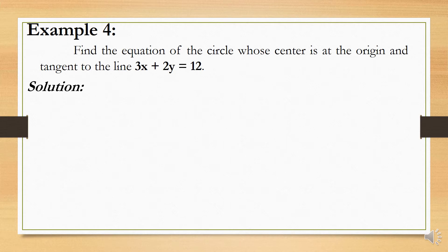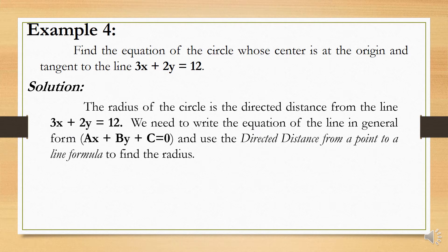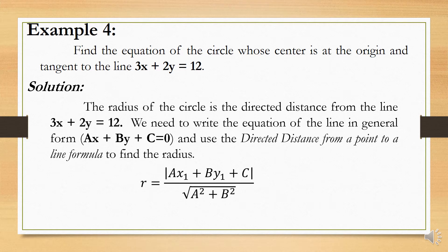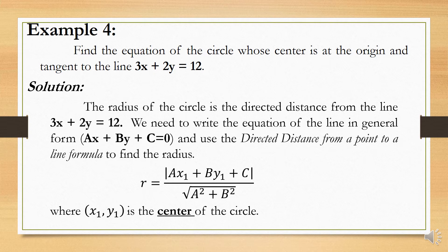To solve this problem, we need to find first the radius of the circle. The radius of the circle is the directed distance from the line 3x plus 2y is equal to 12. We need to write the equation of the line in general form, which is ax plus by plus C is equal to 0, and use the directed distance formula from a point to a line to find the radius. The formula is the absolute value of A times x sub 1 plus B times y sub 1 plus C, all over the square root of A squared plus B squared, where x sub 1 and y sub 1 are the coordinates of the center of the circle.